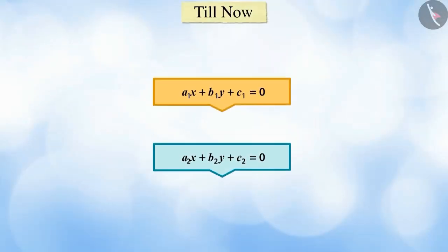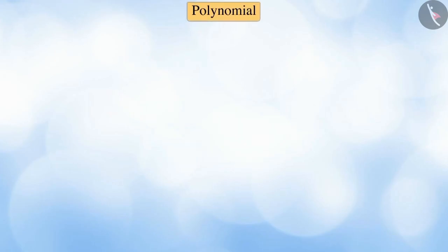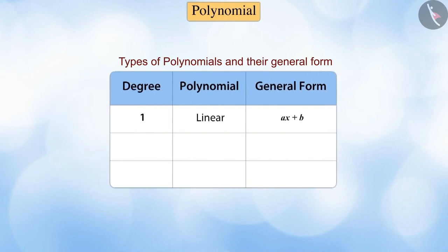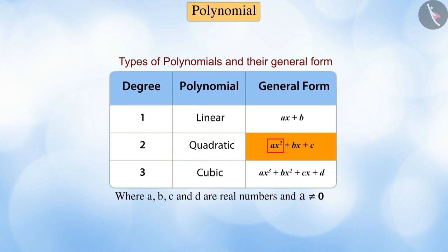Till now, we studied about linear equations in two variables. In this video today, we will study about quadratic equations and the standard form of quadratic equations. In the previous session, you have already studied about polynomials. Do you remember about quadratic polynomials? Can you tell what would be its general form? The general form of a quadratic polynomial is ax squared plus bx plus c.